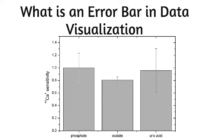Error bars help to indicate estimated error or uncertainty to give a general sense of how precise a measurement is. This is done through the use of markers drawn over the original graph and its data points.